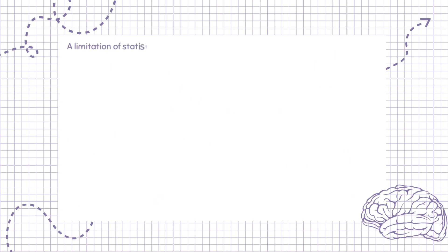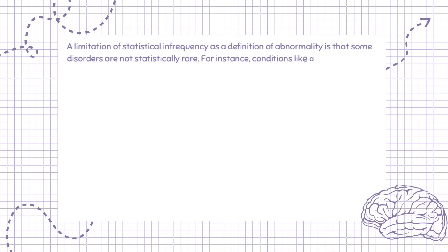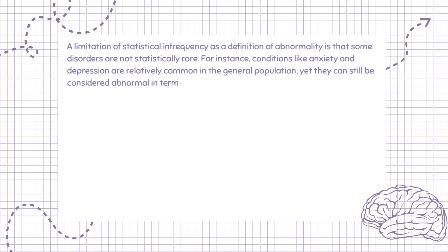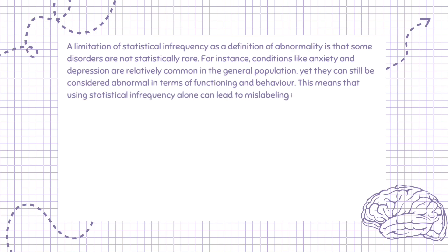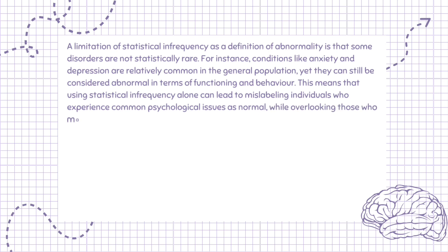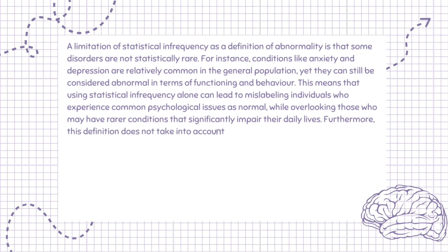A limitation of statistical infrequency as a definition of abnormality is that some disorders are not statistically rare. For instance, conditions like anxiety and depression are relatively common in the general population, yet they can still be considered abnormal in terms of functioning and behavior. This means that using statistical infrequency alone can lead to mislabeling individuals who experience common psychological issues as normal, while overlooking those who may have rarer conditions that significantly impair their daily lives. Furthermore, this definition does not take into account the social context or cultural norms, which can vary widely.